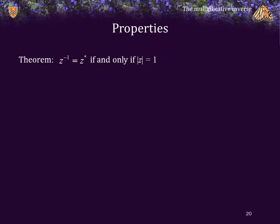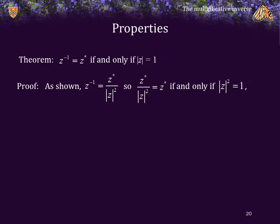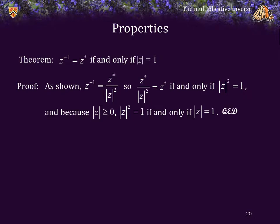Theorem: The inverse is equal to z star if and only if the magnitude equals 1. The inverse is already the expression z star over the magnitude squared. So if z star over the magnitude squared equals z star, that can only be true if the magnitude squared equals 1. Because the magnitude is greater than or equal to 0, the magnitude squared equals 1 if and only if the magnitude is 1. What that means is that the inverse of any number on the unit circle of the complex plane is another complex number on the unit circle — in fact, the complex conjugate.